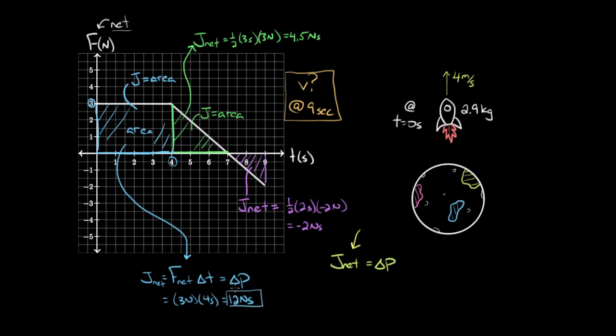And we can find the total net impulse by just adding up all the individual impulses. So during the first four seconds, there was 12 newton seconds of impulse. During the next three seconds, there was 4.5 newton seconds of impulse. And during this last portion, there was negative two newton seconds of impulse, which if you add all those up, 12 plus 4.5 plus negative two, you're gonna get positive 14.5 newton seconds of impulse. That's good news for our alien buddies over here. They need to get off this moon, which means they need positive impulse, upward impulse. They got some positive impulse.